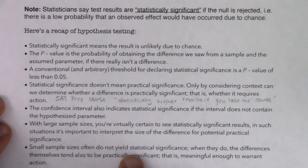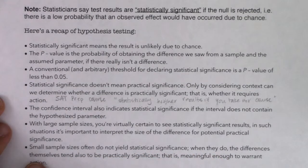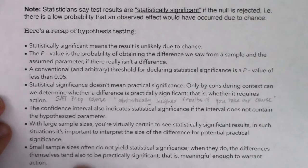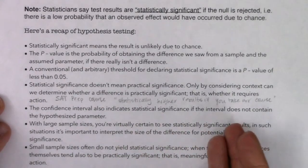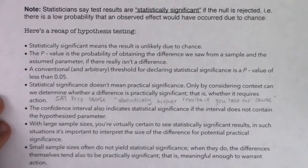Small sample sizes often do not yield statistical significance. When they do, the differences themselves tend to also be practically significant — they're meaningful enough to warrant action. If we find a small p-value with a small sample size, it's probably time to reject the null and change your way of thinking, because the null hypothesis always represents the status quo.